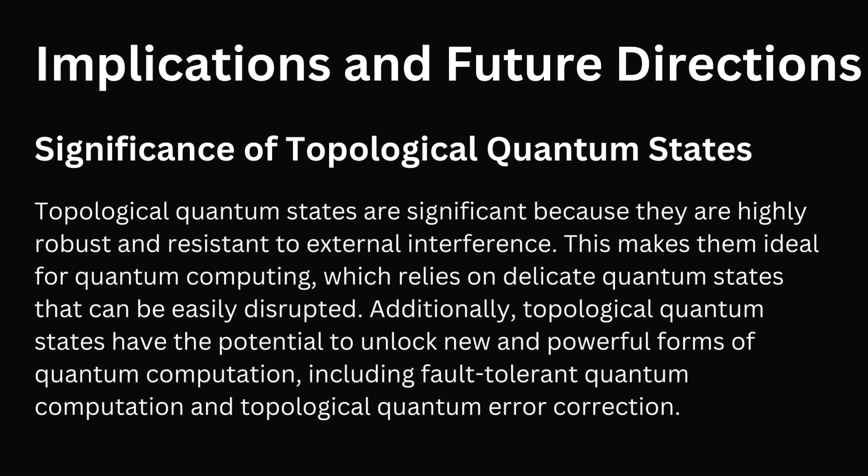Implications and Future Directions. Topological quantum states are significant because they are highly robust and resistant to external interference. This makes them ideal for quantum computing, which relies on delicate quantum states that can be easily disrupted. Additionally, topological quantum states have the potential to unlock new and powerful forms of quantum computation, including fault-tolerant quantum computation and topological quantum error correction.